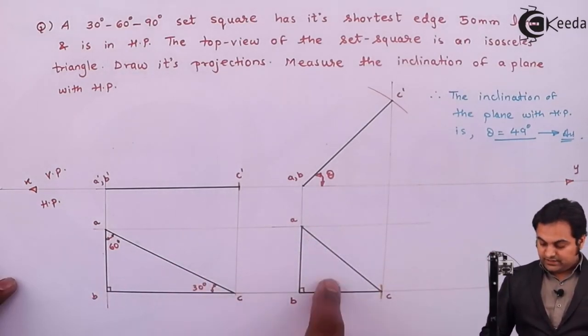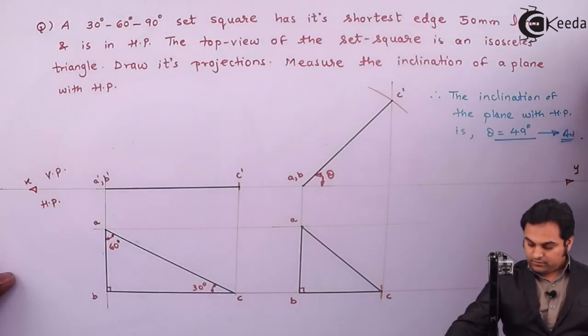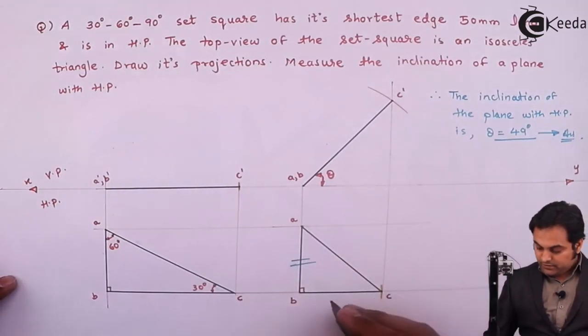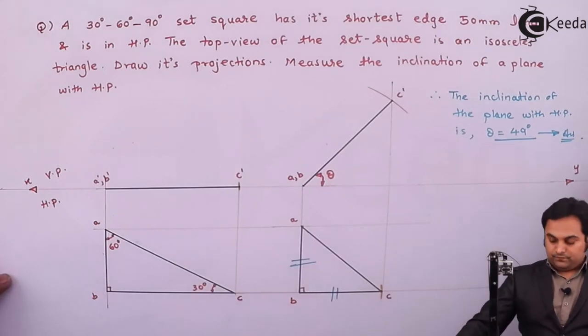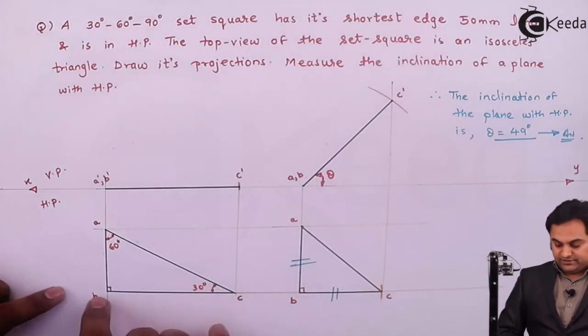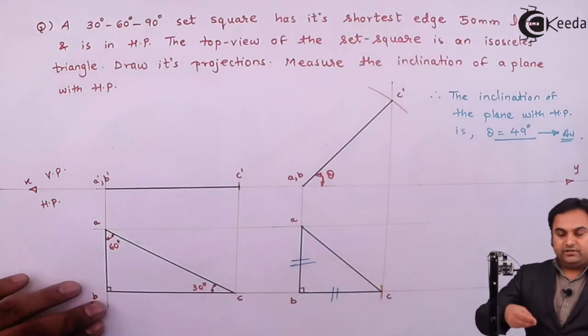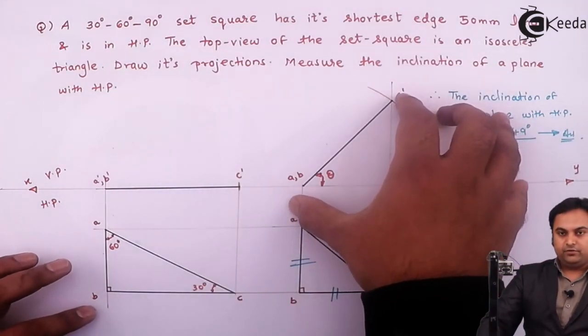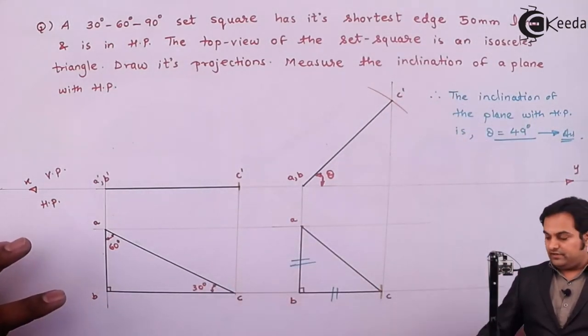which has sides AB equal to side BC. Previously, it was a set square of 30, 60, 90. Now when I have tilted it, as we can see it into the front view, the shape which we are getting is an isosceles triangle.